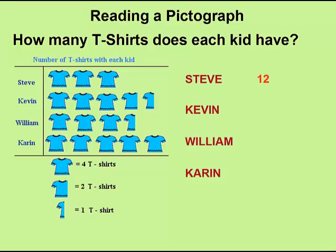Kevin has three full t-shirts, a partial one, and then a less than partial one, so that would be twelve plus two plus one, or fifteen t-shirts. William would have twelve plus one t-shirt, or thirteen t-shirts, and Karen would have five times four, or twenty t-shirts.